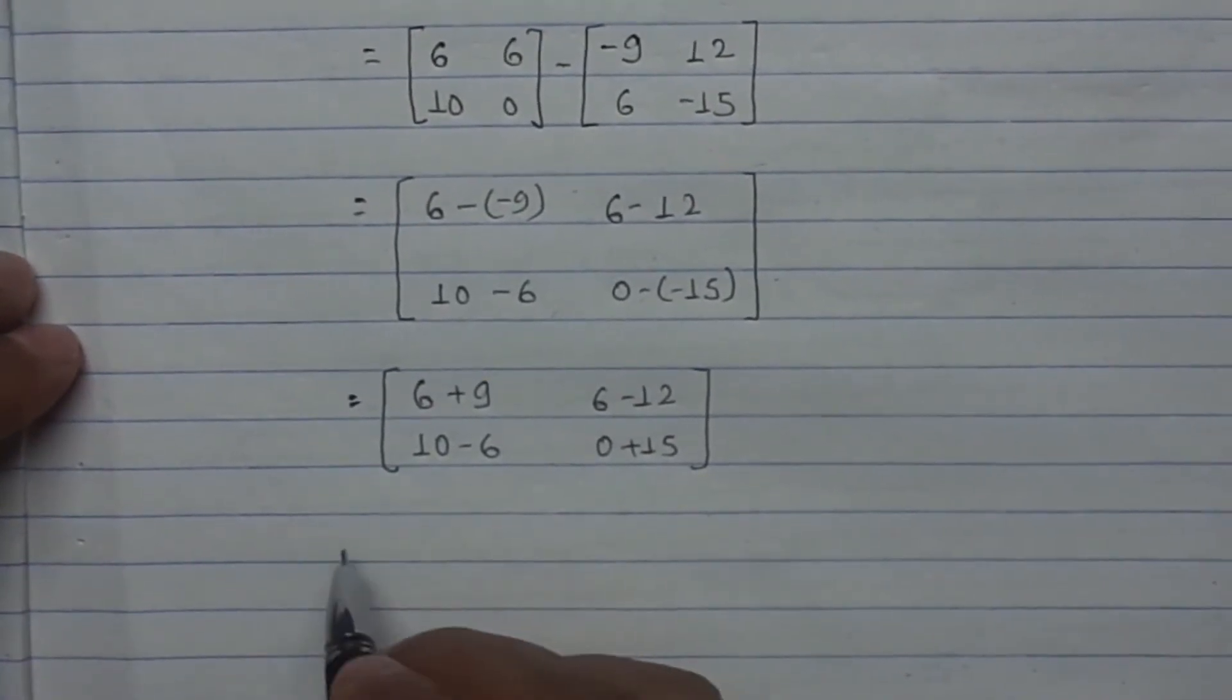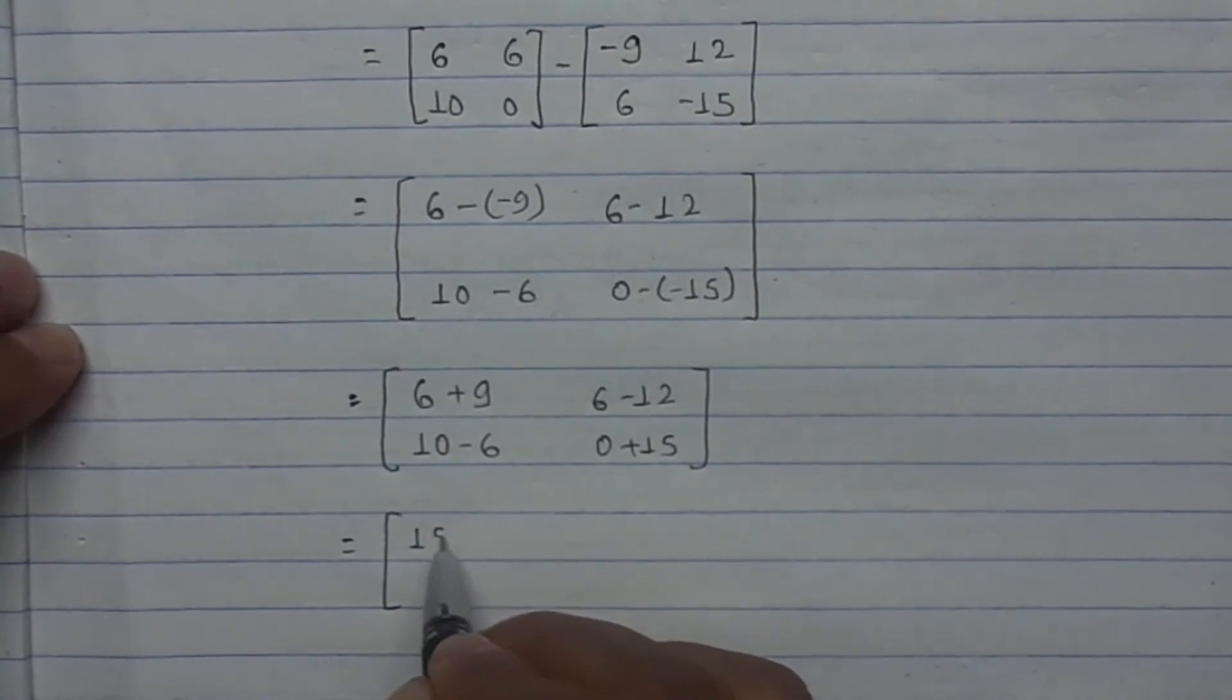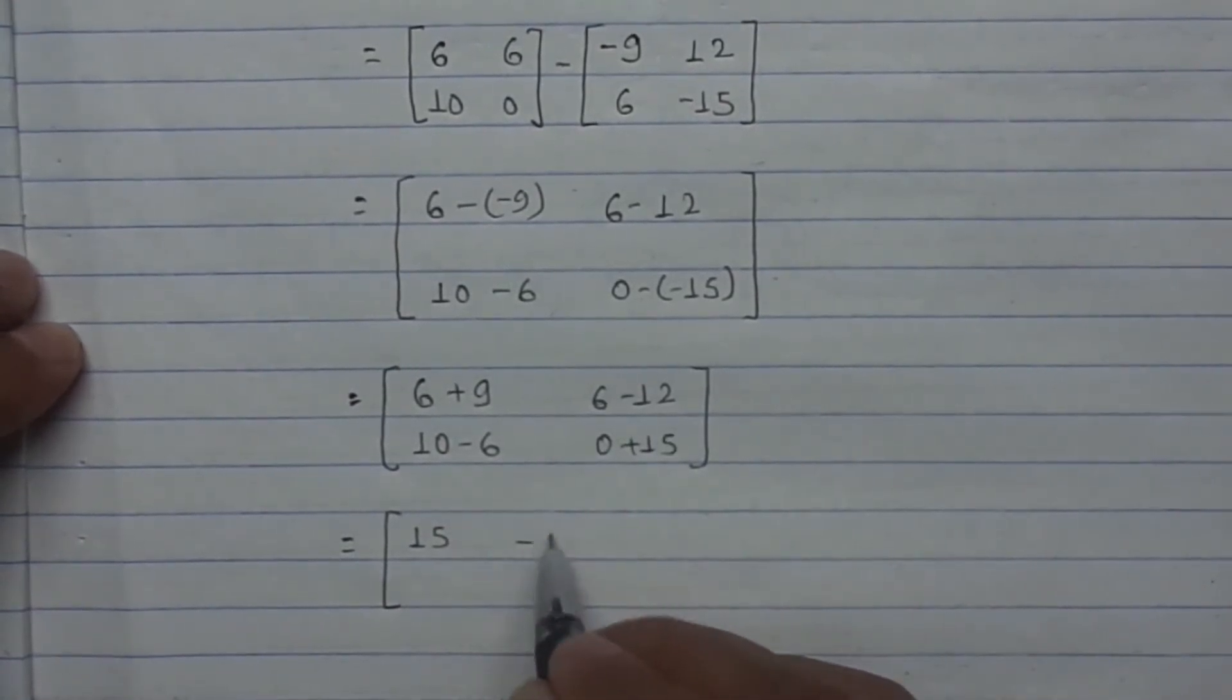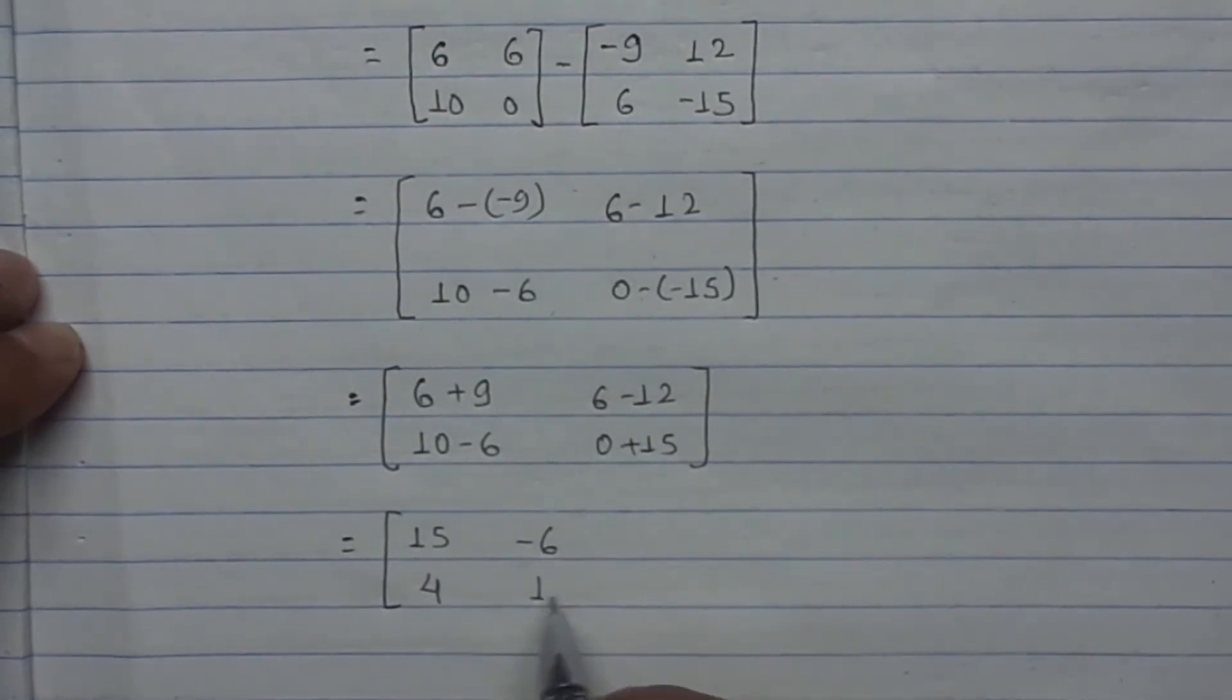After this, 6 plus 9 is 15, 6 minus 12 is -6, 10 minus 6 is 4, 0 plus 15 equals 15.